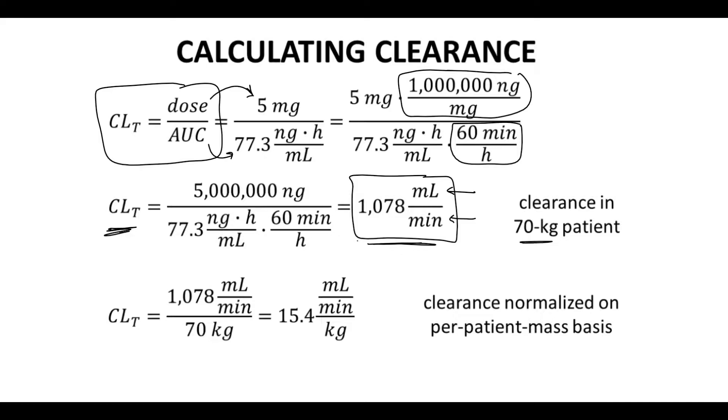Now this is the clearance for a full 70 kilogram patient. We normally normalize this based on patient mass. So here is our total clearance that we calculated. And let's just divide it by 70 kilograms. And what that gives is a number 15.4 milliliters per minute per kilogram patient mass. This is how you normally see clearance values reported.